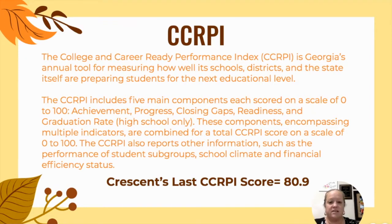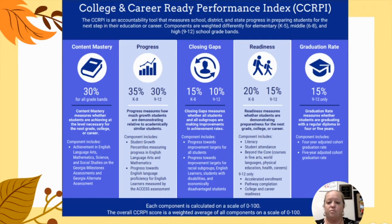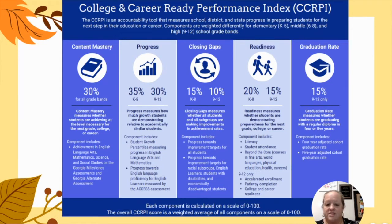We did not receive a CCRPI score from last school year due to the school shutdown from the COVID pandemic. Here's the actual breakdown of the components that go into our CCRPI score. Content mastery counts for 30%, measuring whether students are achieving at the level necessary for the next grade, college, or career. Progress counts for 35% of our score in grades K through 8, and measures how much growth students are demonstrating relative to academically similar students.